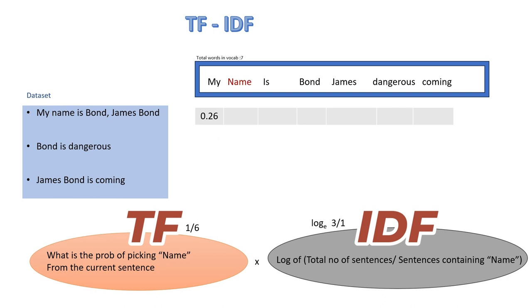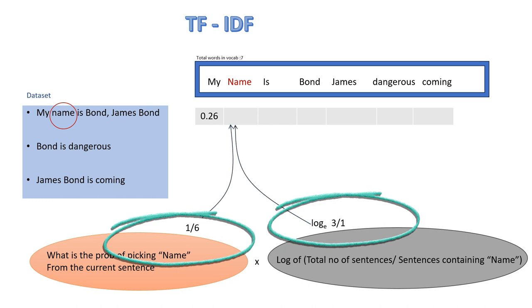We now move to the second word in our vocabulary, find its TF and IDF, multiply them and write it here.